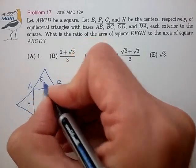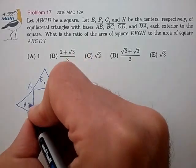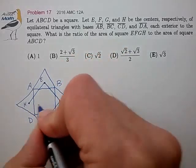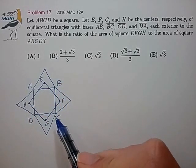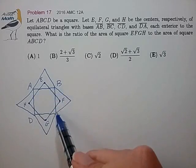So that defines E, F, G, and H. We'll hook those up to form that square. And our task here is to find the ratio of the area of EFGH to the area of ABCD.